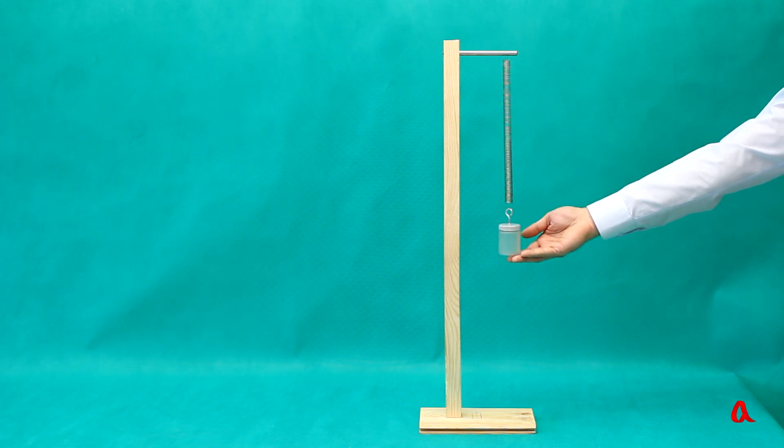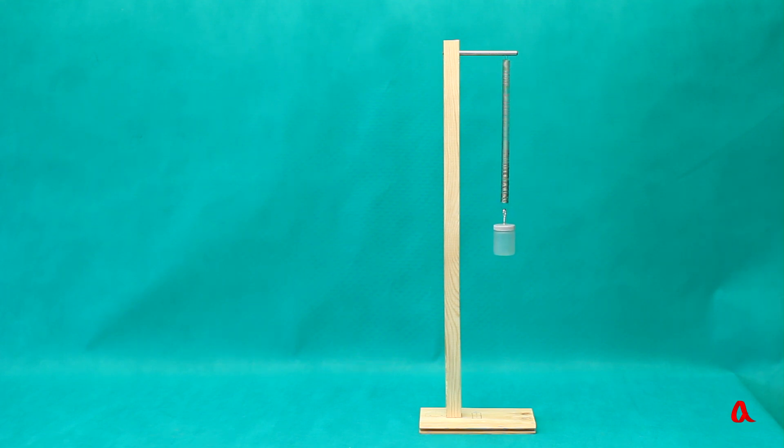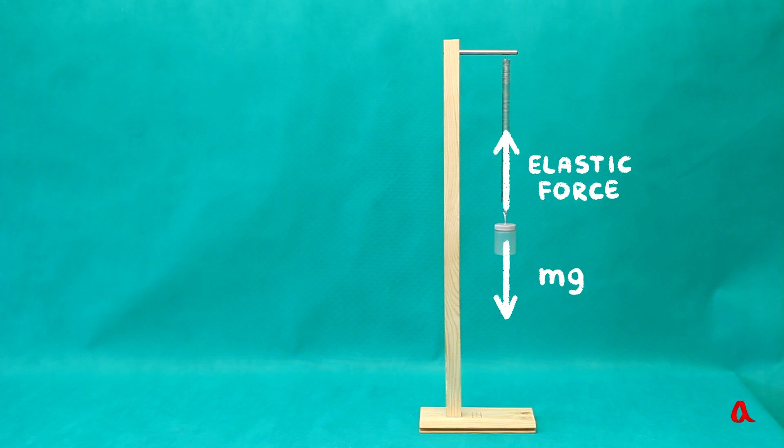Here is a weight hanging on a spring. It is at rest, so the sum of the forces acting on it is zero. What forces are acting on it? Firstly, there's the downward force of gravity. Secondly, there's the elastic force of the spring which balances the force of gravity most precisely.